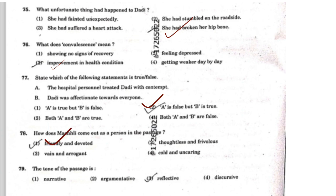Question 79: 'The tone of the passage is — narrative, argumentative, reflective, or discursive?' The correct answer is option 3: reflective tone. Reflective tone means someone is sharing their experience — a reflection of experiences. If you read the passage, it is about someone's personal experience, so it is reflective.